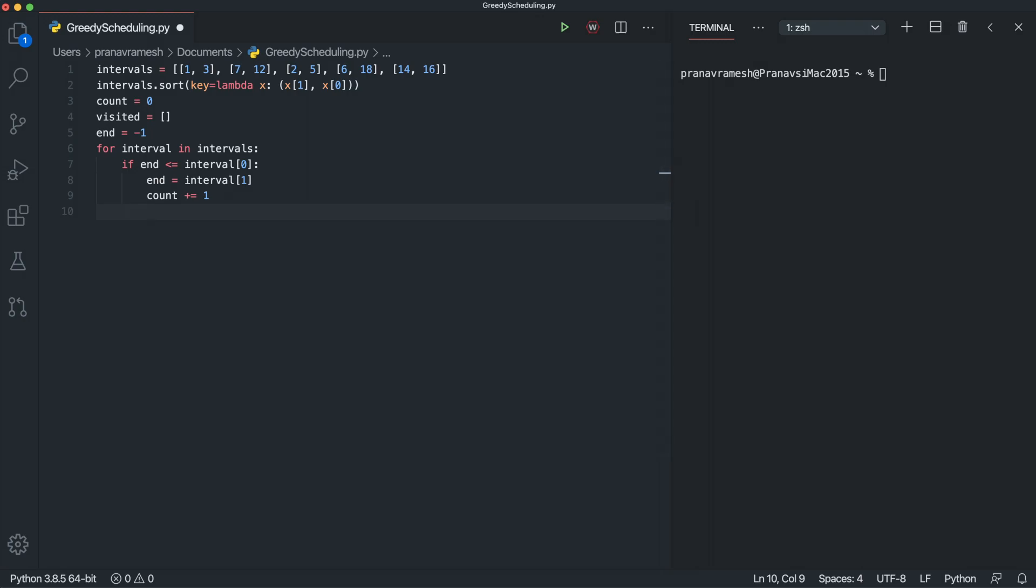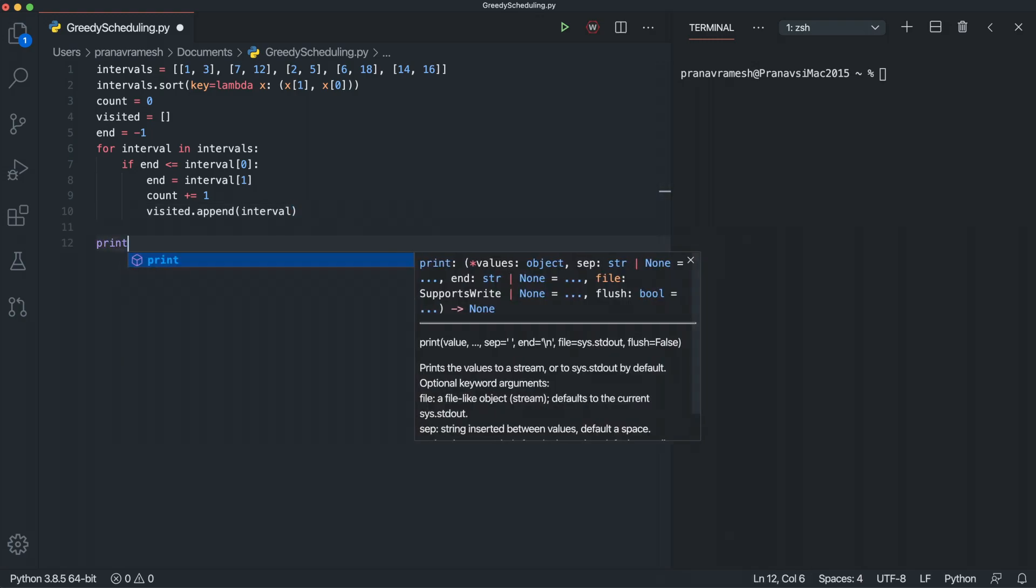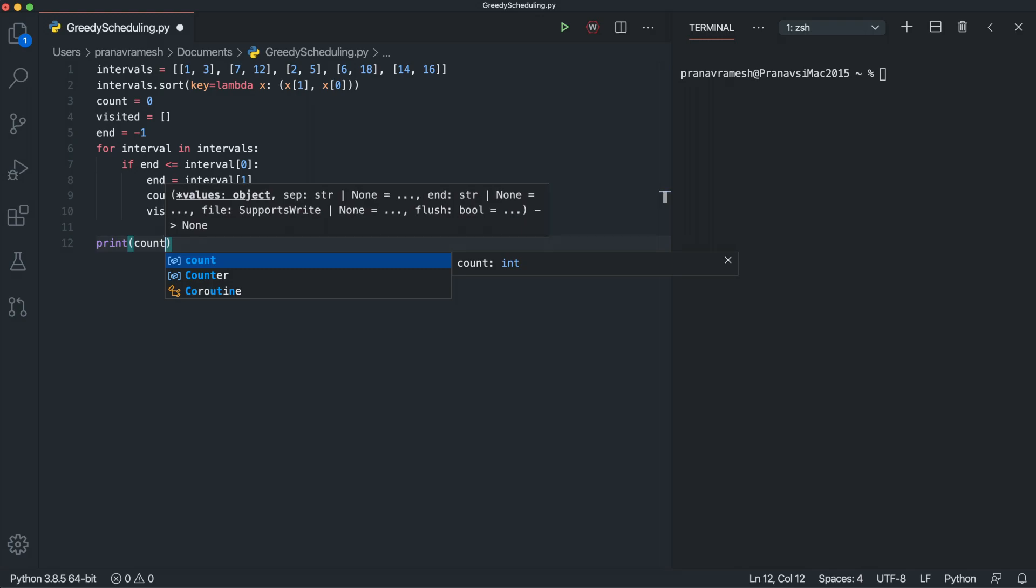And then we have the optional line visited.append(interval). And we're just including this line so we can see what intervals, what events we're able to attend. It's not required, of course. And so that's it for this algorithm. Finally, we can just print count. That is the greatest number of events we were able to visit. And then we'll also just print visited.